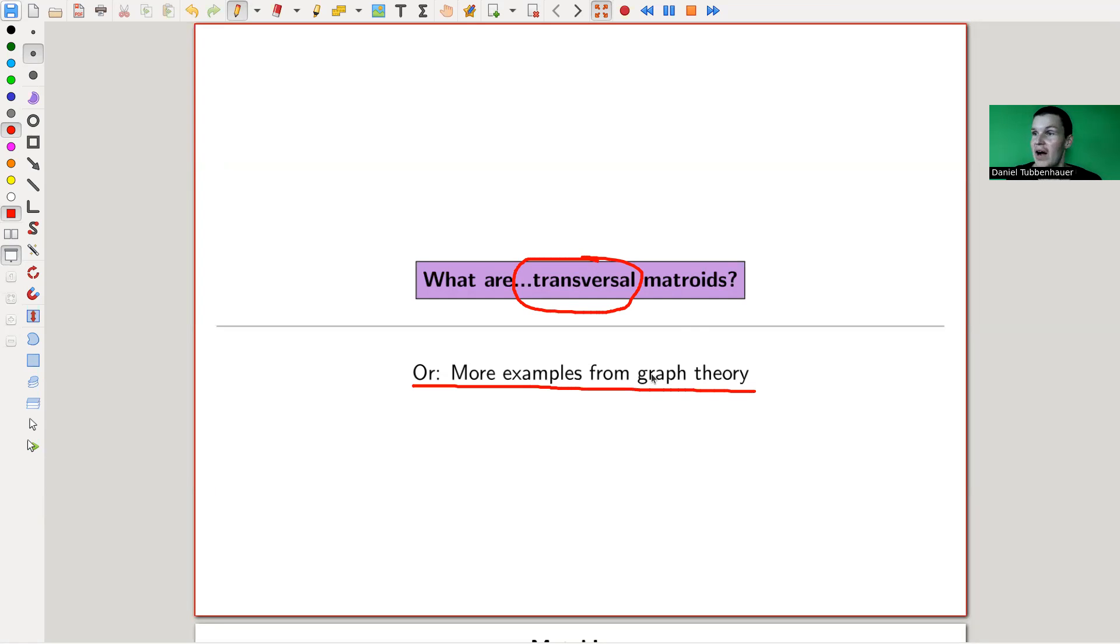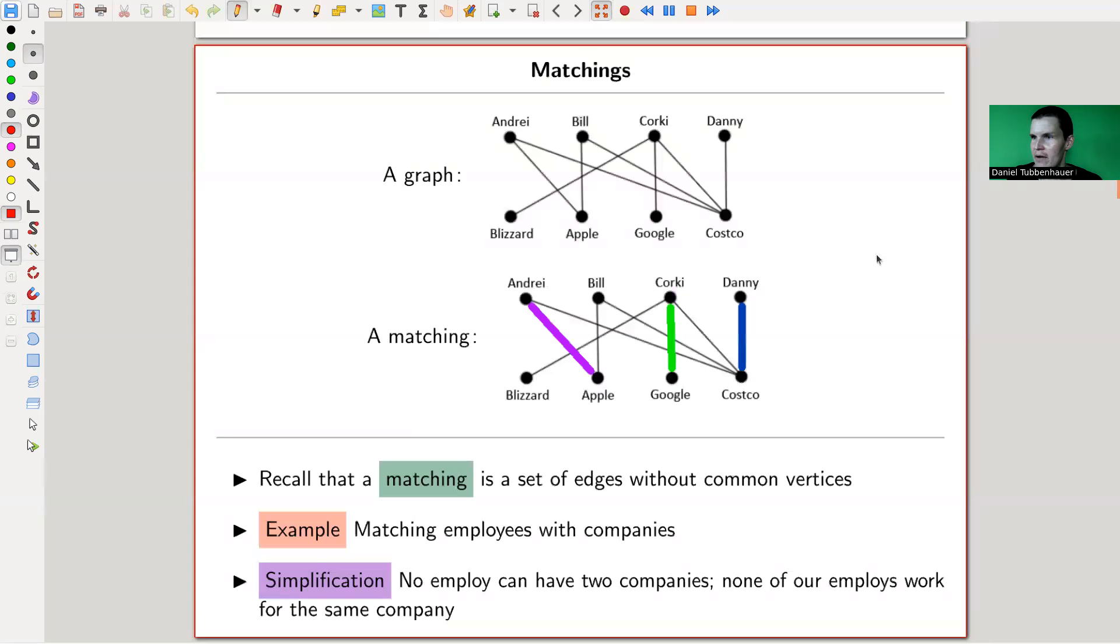So more examples from graph theory. Okay, so what I need is a matching. So the previous graph theoretical example was a forest, remember? There's kind of forests in graphs. And now I'm interested in matchings in graphs.